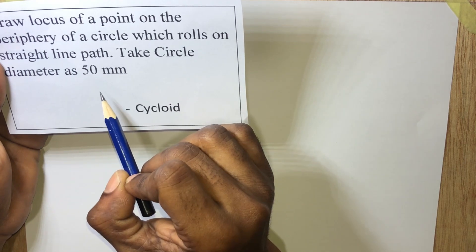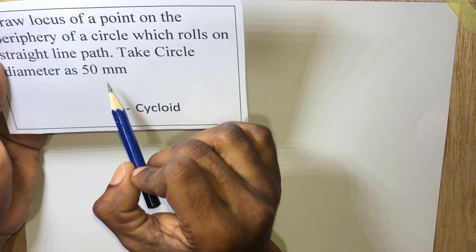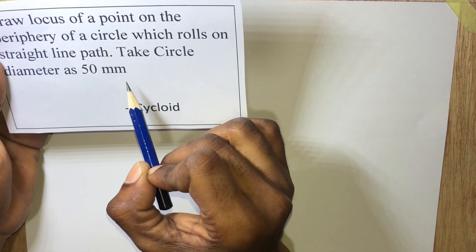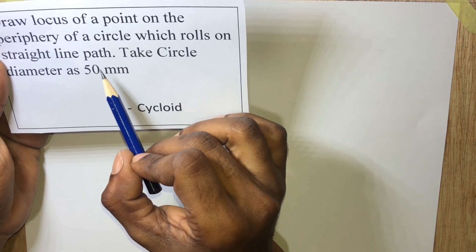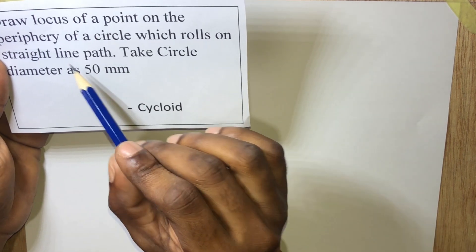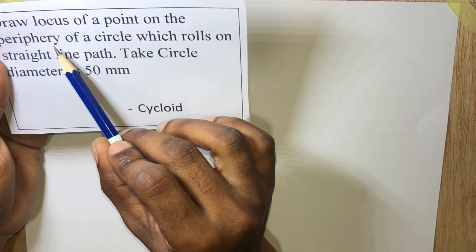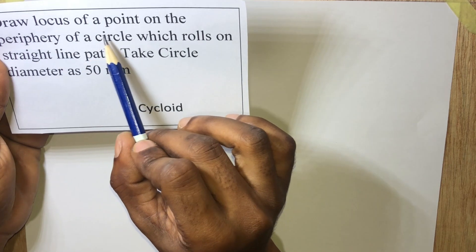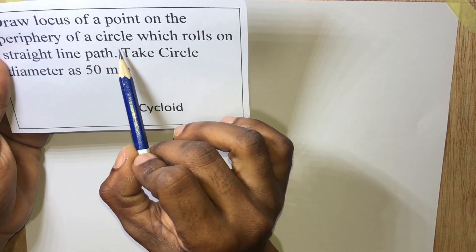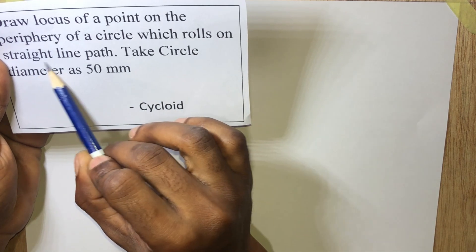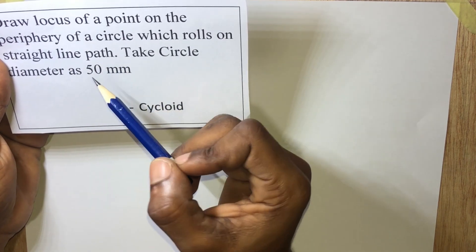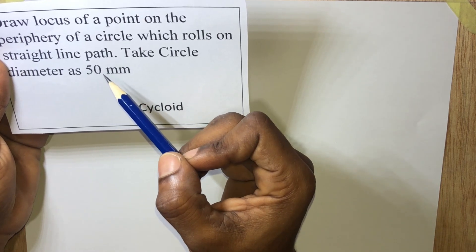Now a cycloid — you have a circle rolling on a horizontal path without slipping. And usually the point is located on the rolling circle. So just that the question said that we should draw a locus of a point on the peripheral of a circle that rolls on a straight line path — this should let you know that we are going to draw a cycloid.